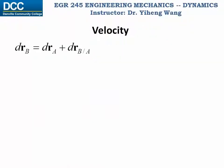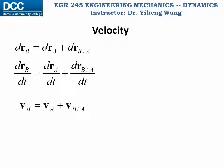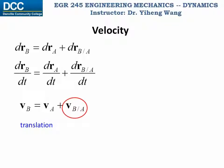If we take the time derivative of this displacement equation, we get the equation for linear velocities for any two arbitrary particles in the same rigid body undergoing general plane motion. The absolute velocity of particle B equals the absolute velocity of particle A plus the relative velocity of B with respect to A. The velocity of particle B has two contributions: V_A represents the contribution from translation, and V_B/A represents the contribution from rotation.